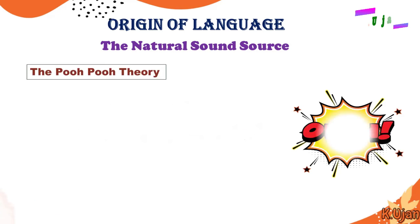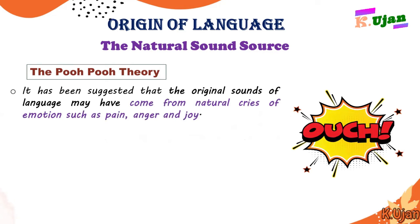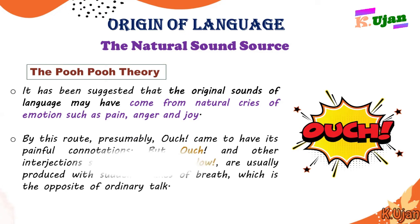Another theory is the Pooh-Pooh theory. It has been suggested that the original sounds of language may have come from natural cries of emotion such as pain, anger, and joy. For example, 'ouch' came to have its painful connotations by this route. Interjections such as 'ah,' 'oh,' and 'wow' are usually produced with a sudden intake of breath, which is the opposite of ordinary talk, and this might have been the origin of language.